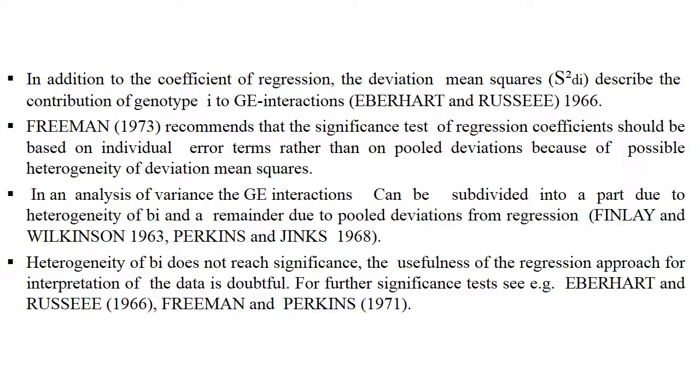In an analysis of variance, the G×E interaction can be subdivided into a part due to heterogeneity of bi and a remainder due to pooled deviation from regression. If heterogeneity of bi does not reach significance, the usefulness of the regression approach for interpretation of data is doubtful.